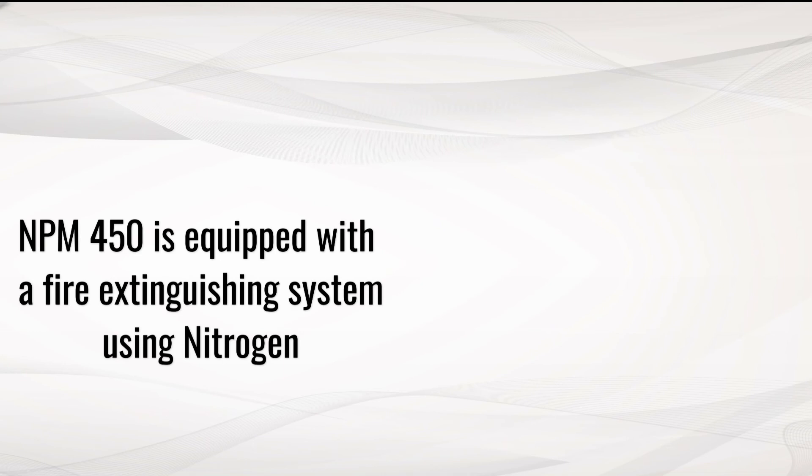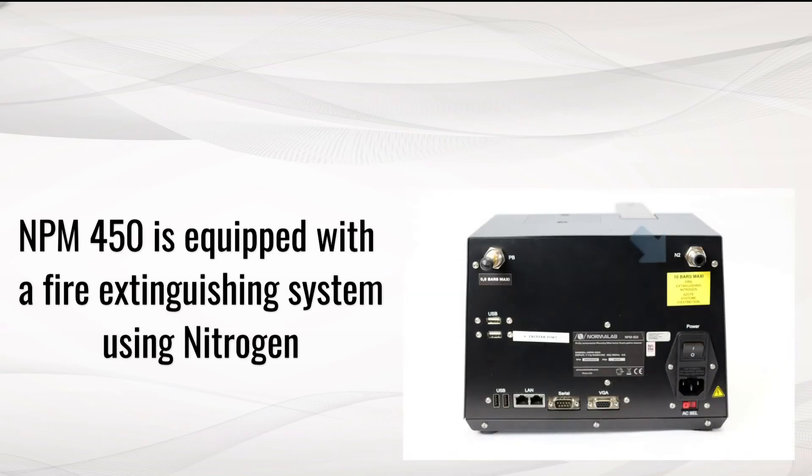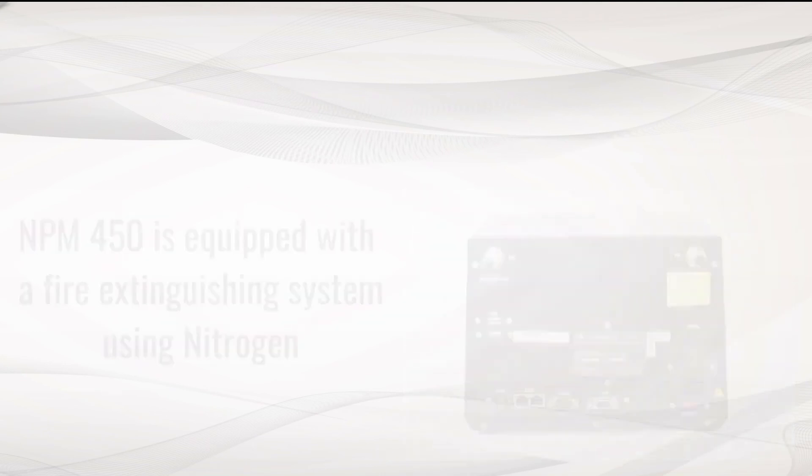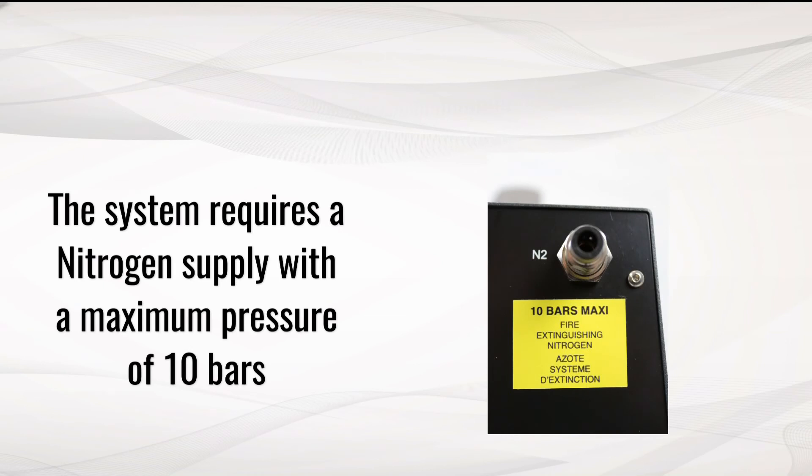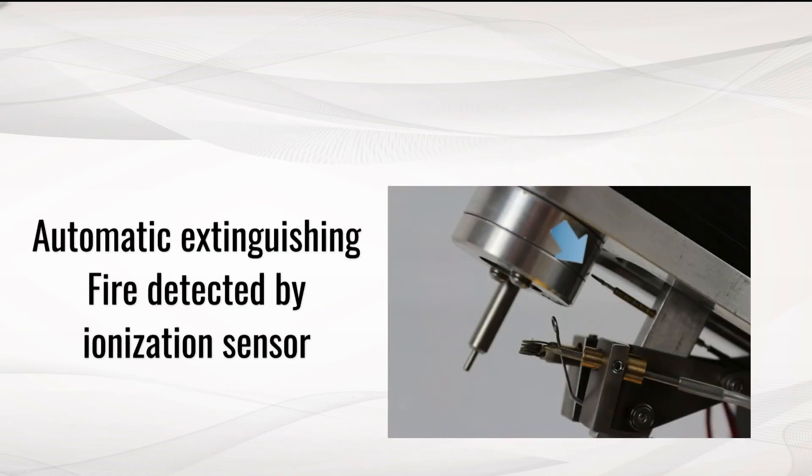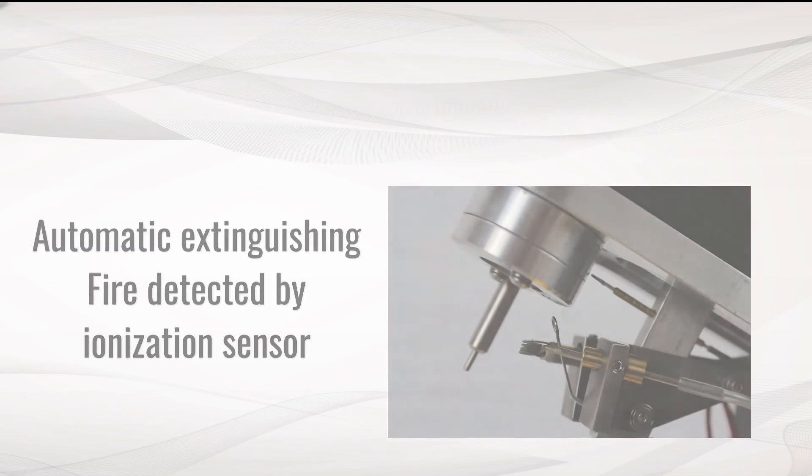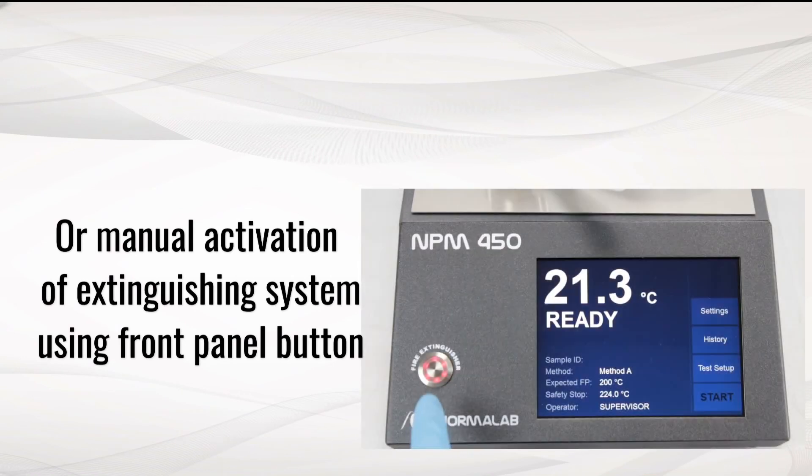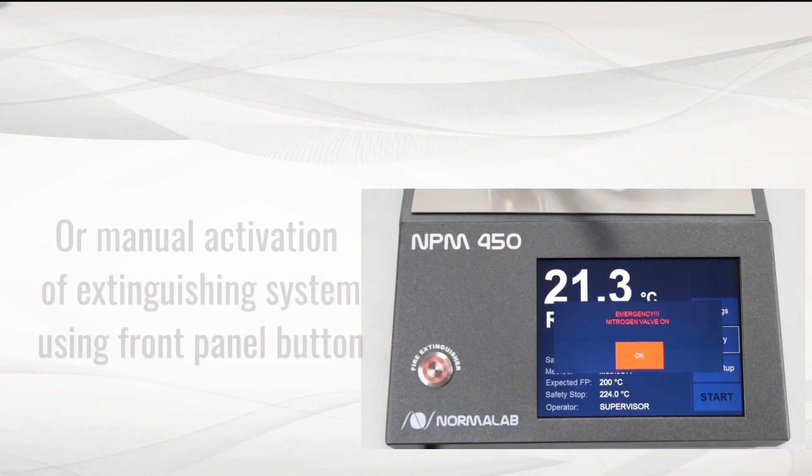NPM 450 is equipped with a fire extinguishing system using nitrogen. The system requires a nitrogen supply with a pressure of 10 bars maximum. The automatic extinguishing system uses a fire detector by ionization sensor, or you can manually activate the extinguishing system using front panel button.